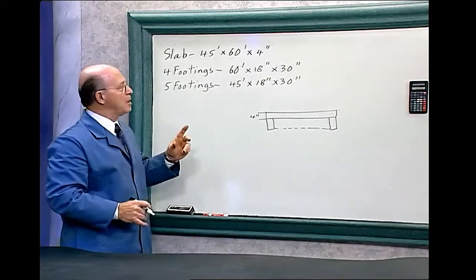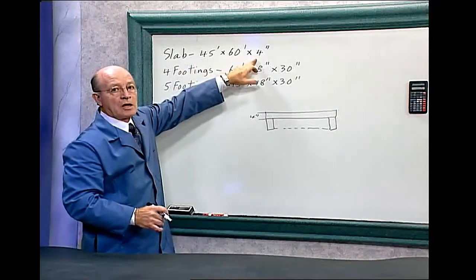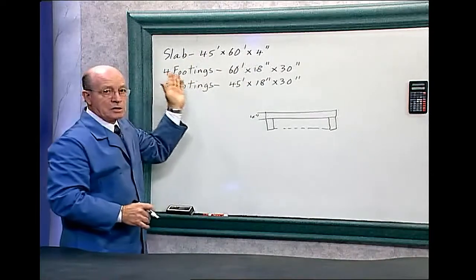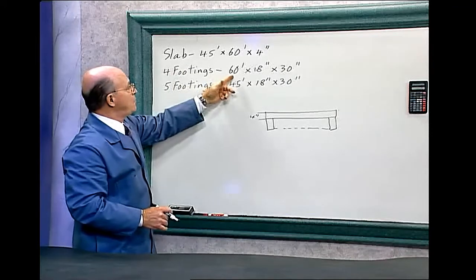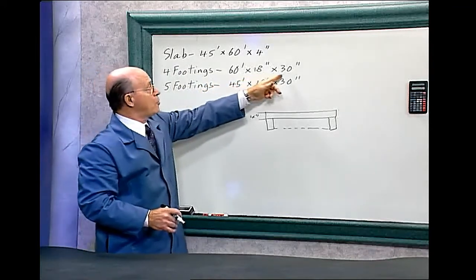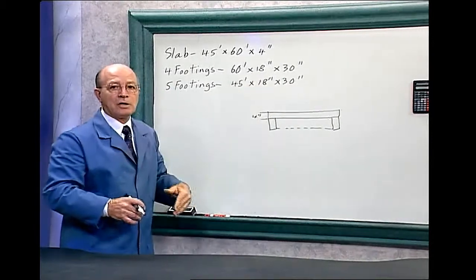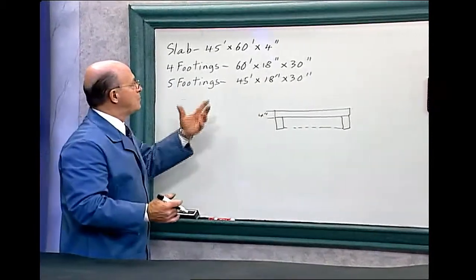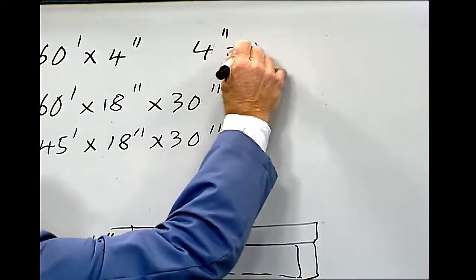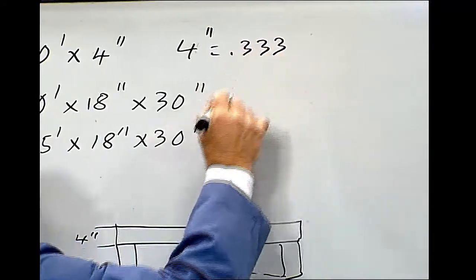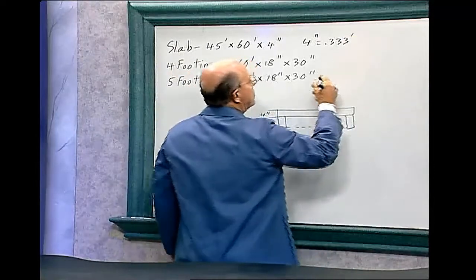Now we have a problem here. We have the slab is 45 feet by 60 feet, but it's 4 inches thick. And remember we have to either make everything inches or everything in feet. We have the same problem here in the footings. This is 60 foot by 18 inches by 30 inches, and 45 feet by 18 inches and 30 inches. So let's convert everything into feet. So 4 inches equals 0.333 feet.